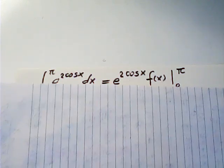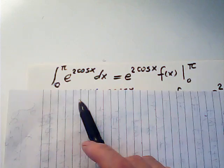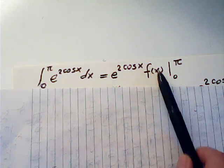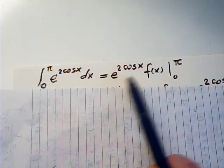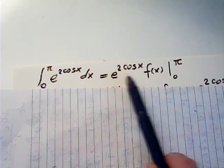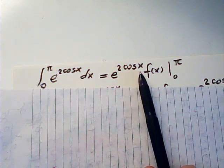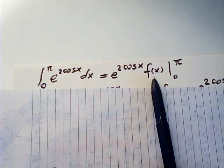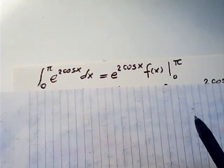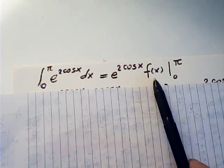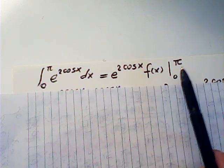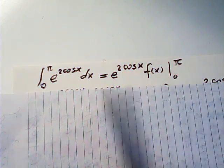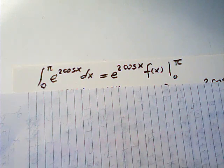Now this integral contains an exponential function, therefore the antiderivative, if it exists, must contain exponential function and it's a sort of product with other function f(x). So if we can find f(x) and if this antiderivative exists, then we can easily find the value of this definite integral.